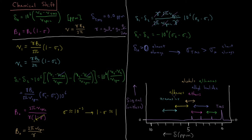Alkenes and aromatics are not more electronegative than the other groups, but there are additional effects due to all those electrons in a ring and the π systems of double bonds. These cause different magnetic effects that significantly deshield the nucleus and lower the shielding constant — not due to electron withdrawal, but due to magnetic effects from π electrons. In summary, chemical shift is directly proportional to the negative of the shielding constant: more electron-withdrawing groups mean less shielding and a higher chemical shift.